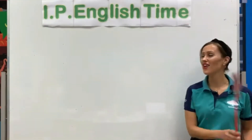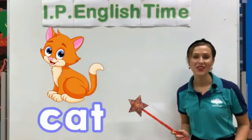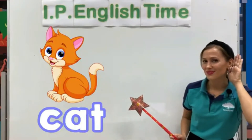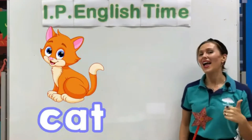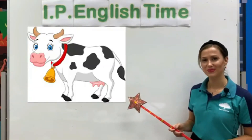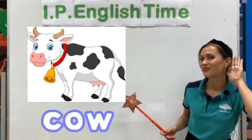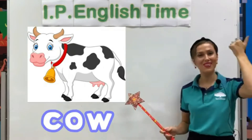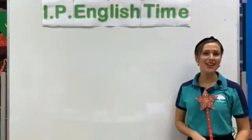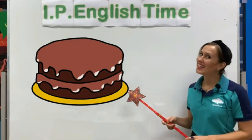Letter C is for Cat. C, C, Cat. Well done! Letter C is for Cow. C, C, Cow. Well done!